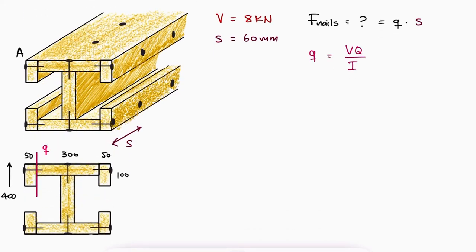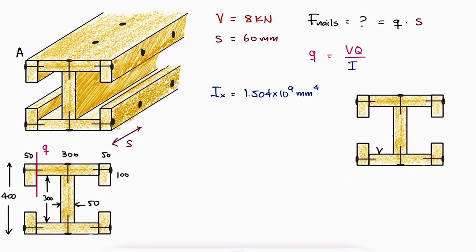If all the dimensions are given, as well as the second moment of area, which has to be that for the entire cross-section, what we really need to calculate is the first moment of area Q.